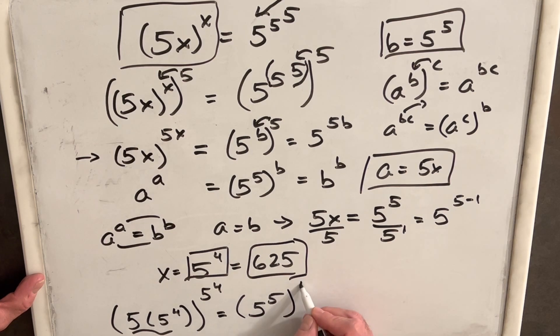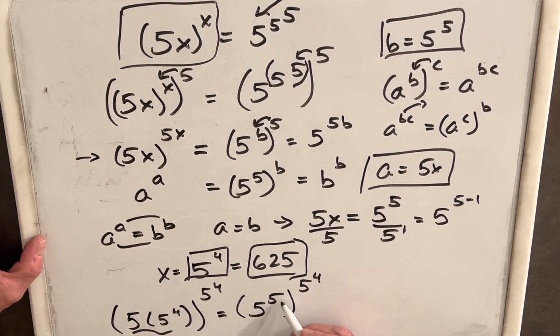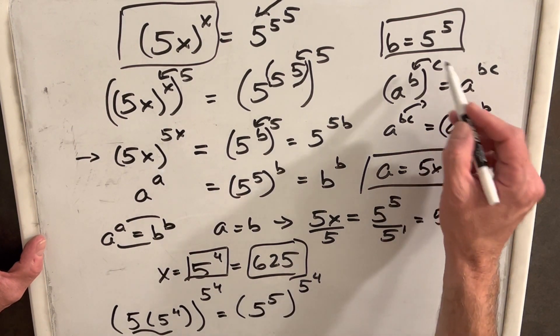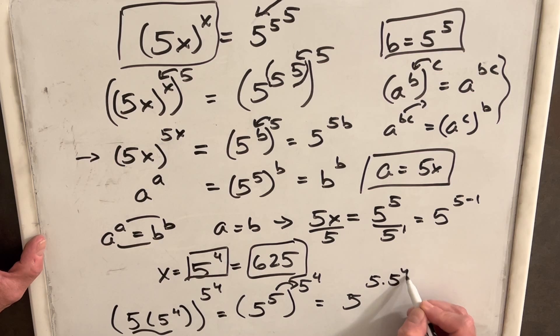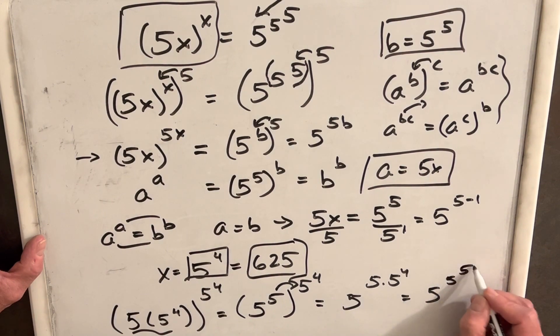So then we have 5 to the 5, we'll keep parentheses, to 5 to the 4th. And then what we can do is, again, using the reverse of this rule up here, we can multiply this out, and we get 5 to the 5 times 5 to the 4th. But multiplying that together, 5 times 5 to the 4th is actually 5 times 5 to the 5, which is exactly what we wanted.